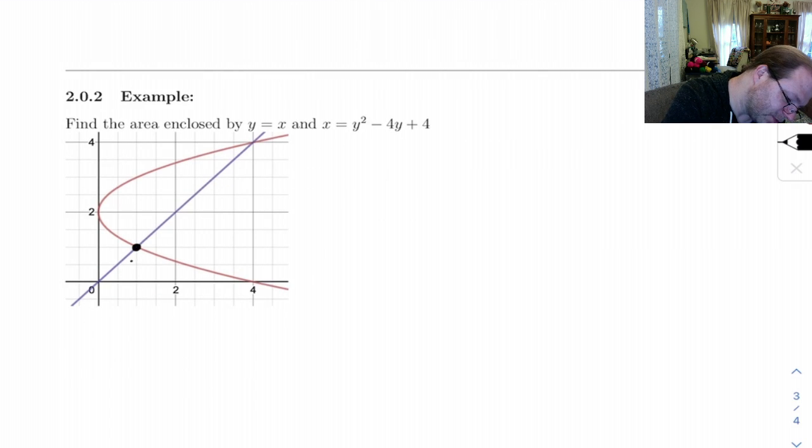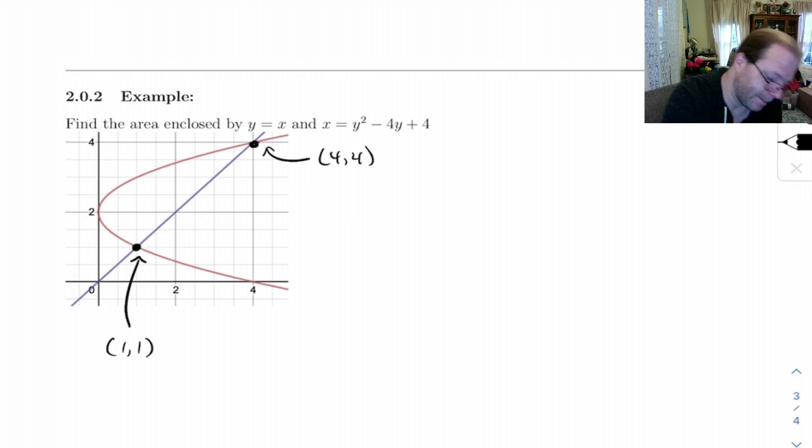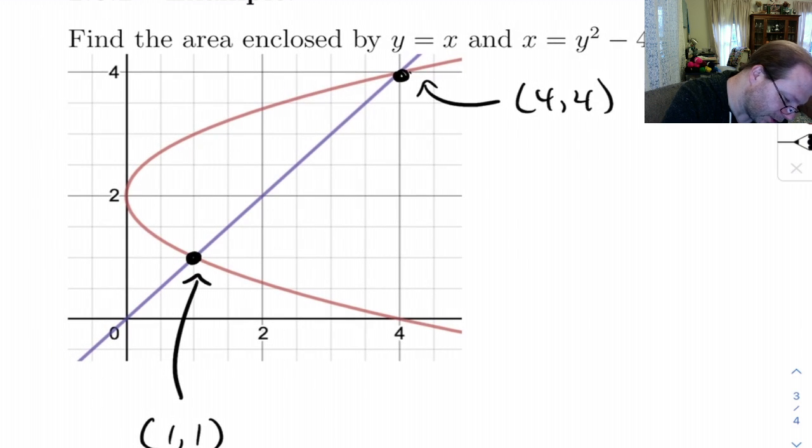Right here, this is the point, let's see, 1, 1. This up here is the point 4, 4. Alright. Now, if we didn't have the graph here, we'd want to solve these two equations simultaneously to figure out where they intersect. So what we're doing here is we're finding the area inside of here.